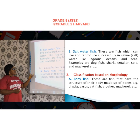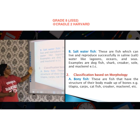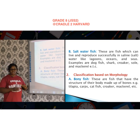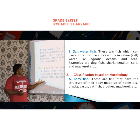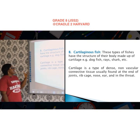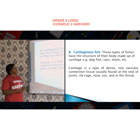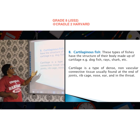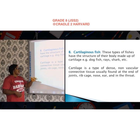The second classification is based on morphology. First, we have the bony fish — these are fish whose body structure is made up of bones. Examples include tilapia, catfish, croaker, and mackerel. The second group is the cartilaginous fish. These fish have body structures made up of cartilage, that is soft bones. Examples include dogfish, ray, and shark.